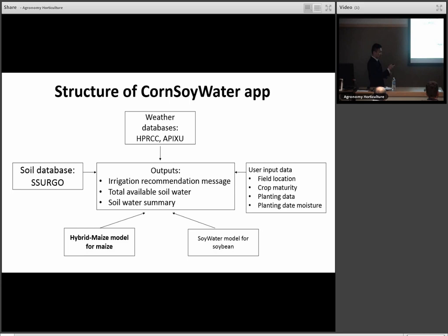What I just showed you is basically the middle part, but the structure of the app has more than that. First, we need a weather database that provides daily weather data in order to enable daily simulation. The data we get is from HPRCC, which is the High Plains Regional Climate Center in Harding Hall. Another one is APIXU, which is a commercial company that provides weather forecasting. Second, we need a database for the soil, which is the SSURGO database. I believe most scientists and companies use this as the standard practice for any technology-related things.